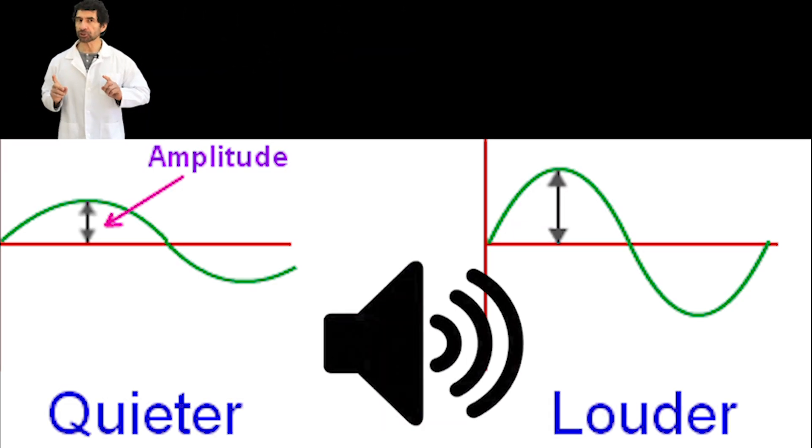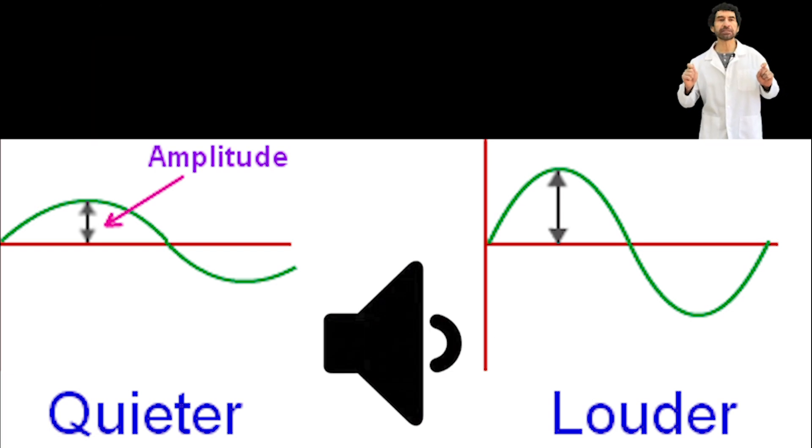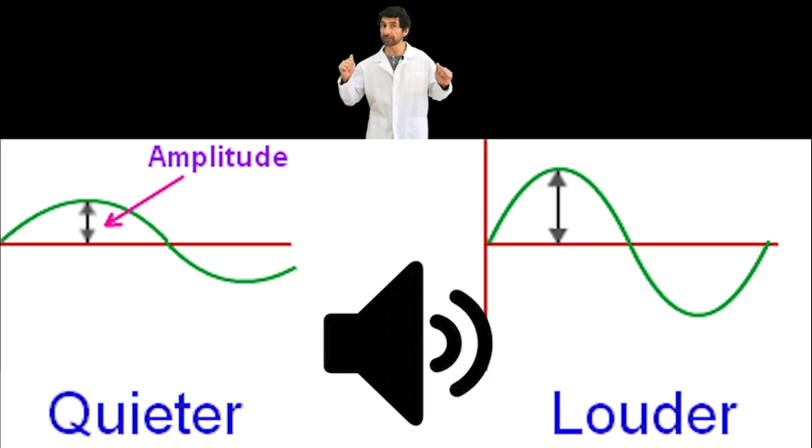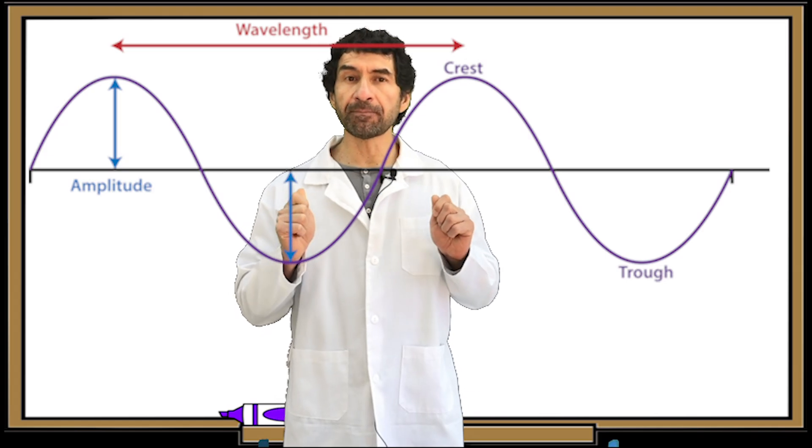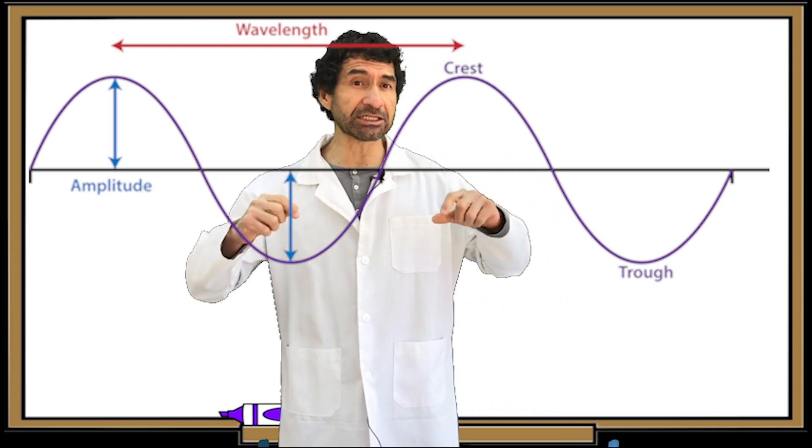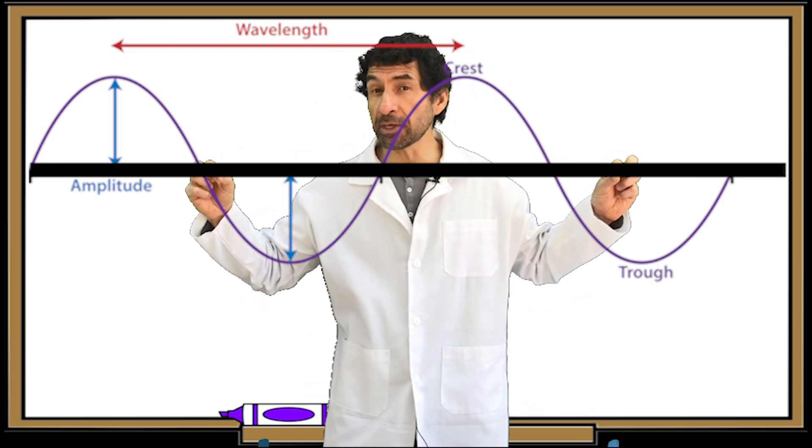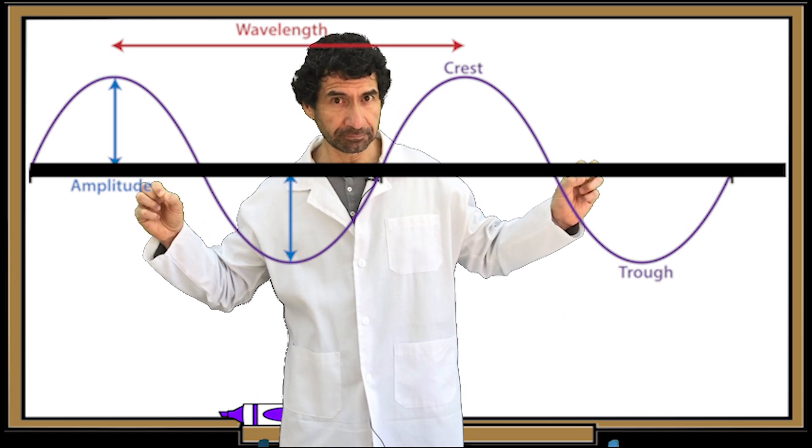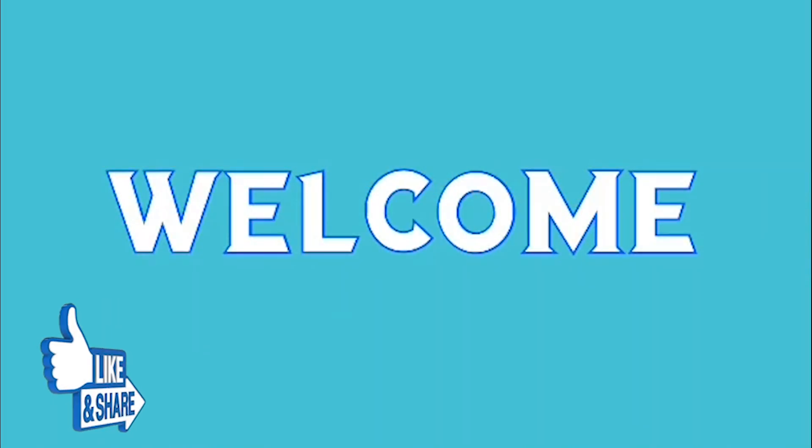Amplitude is measured by finding the distance from a wave's highest or lowest point to its middle. The middle is a horizontal line drawn straight across the middle of a wave.